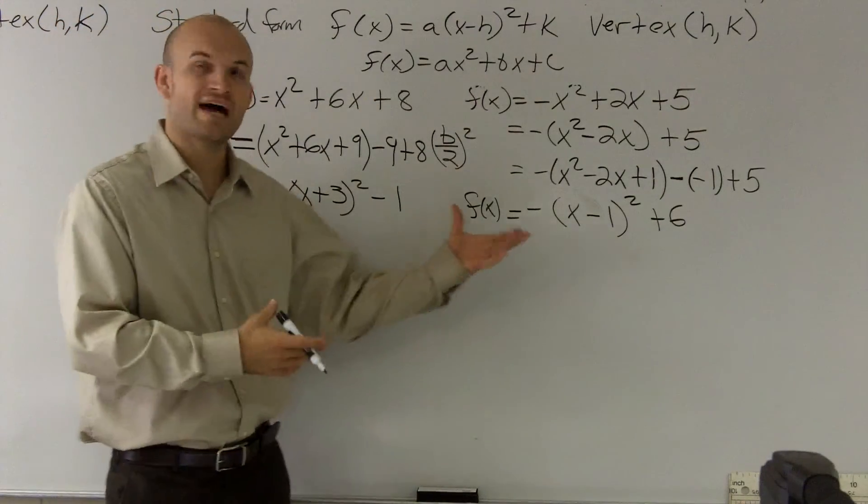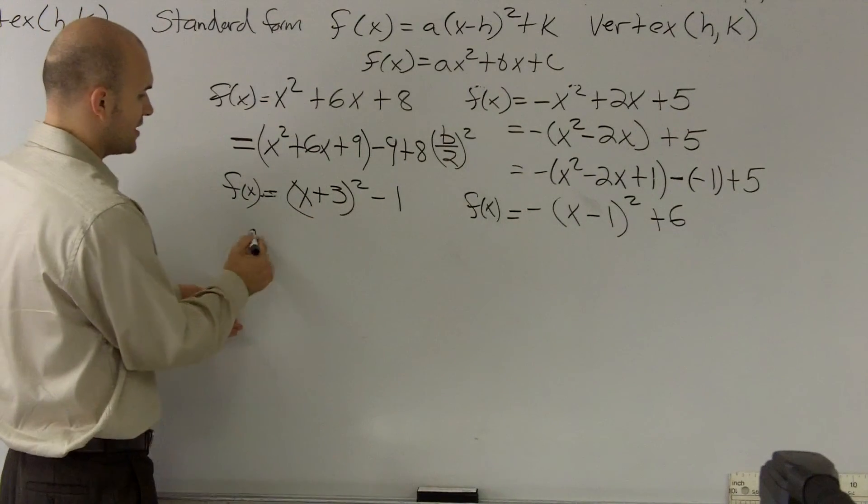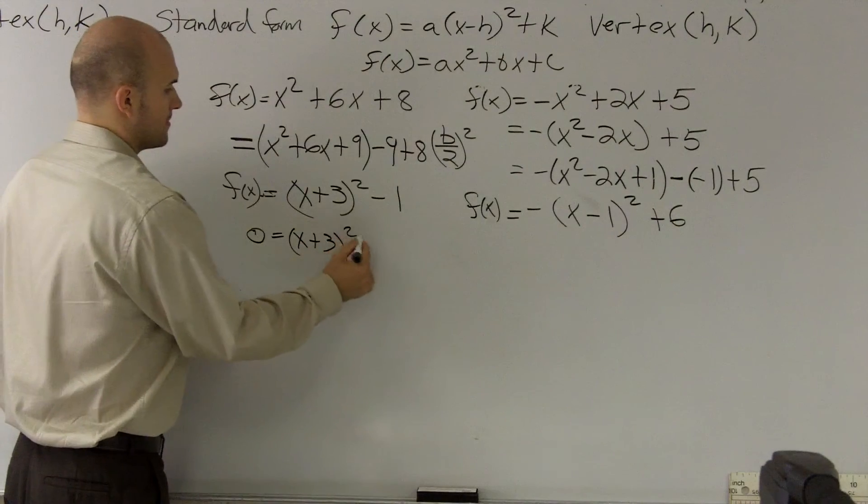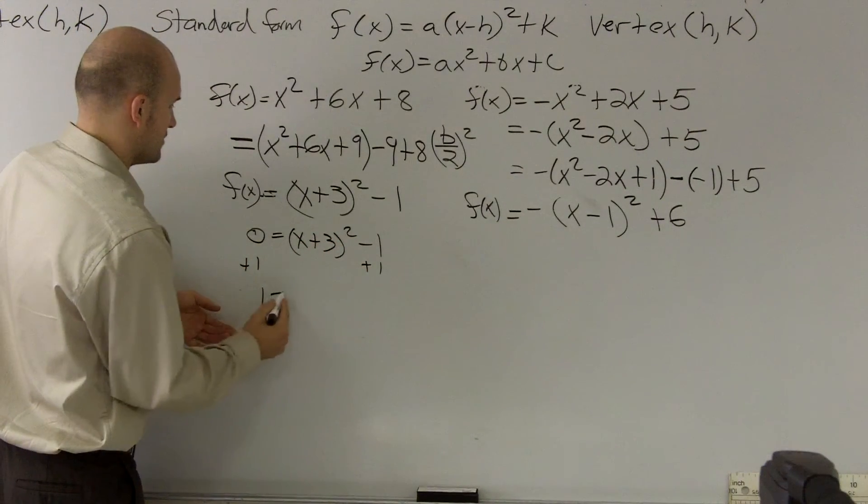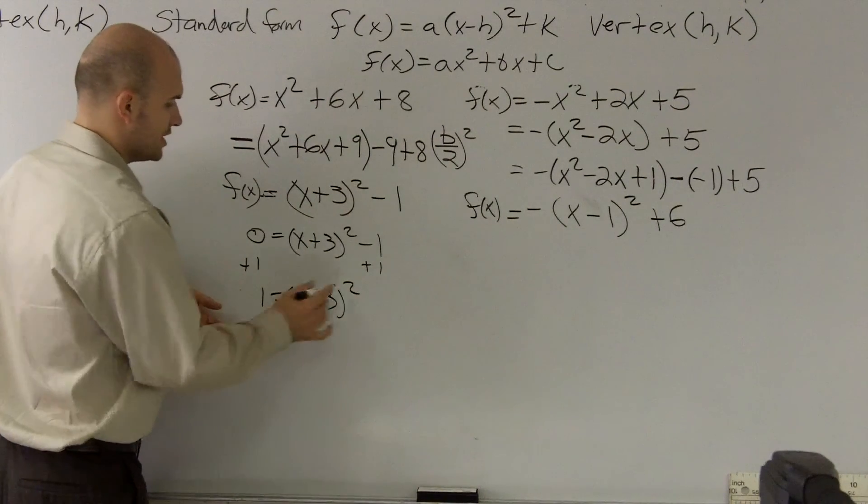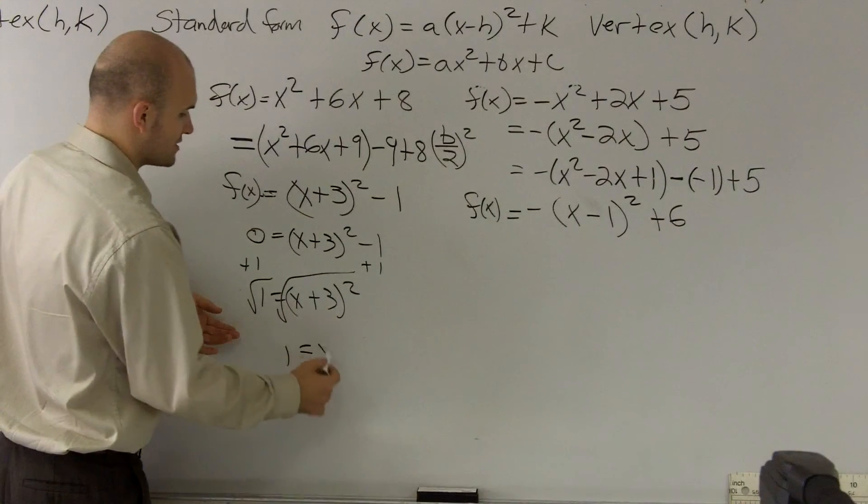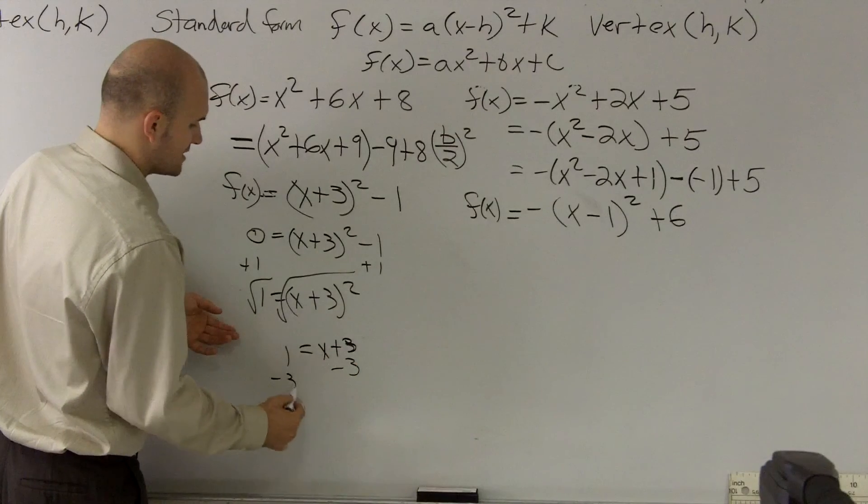A lot of times though, we want to actually find the values for x. Well, ladies and gentlemen, to find the values of x, you just plug f of x equal to 0 and then solve. So to solve, you add a 1. To undo that, you square root the root. So therefore you're left with 1 equals x plus 3 minus 3 on both sides.